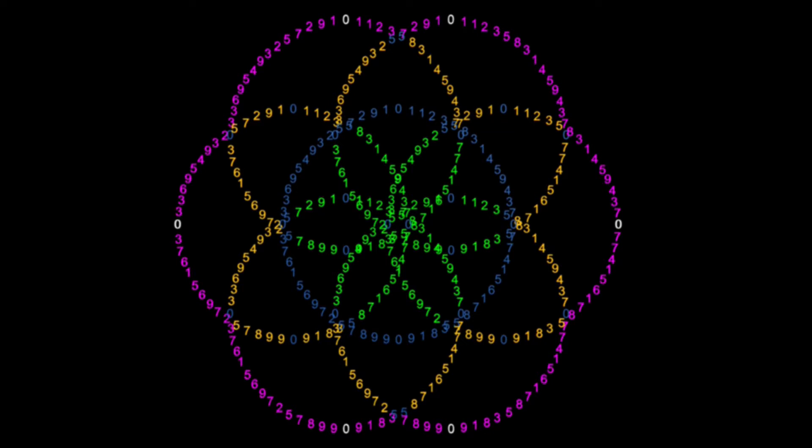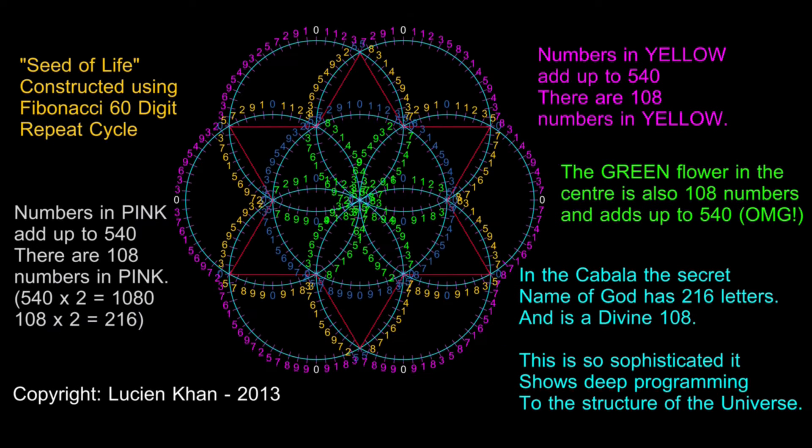In the previous video, we saw how the numbers start to form a flowering pattern when we combine 7 of the Fibonacci building blocks into the seed of life.